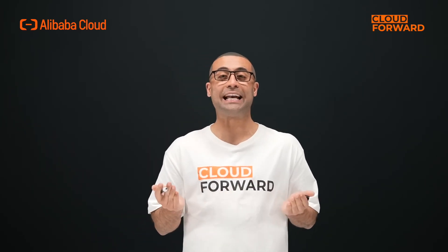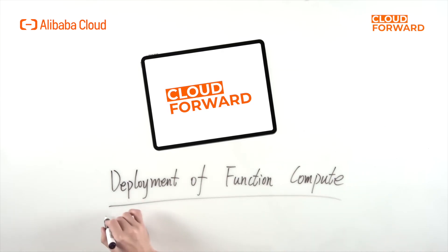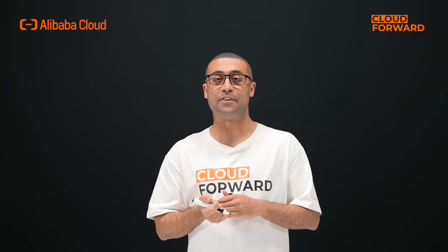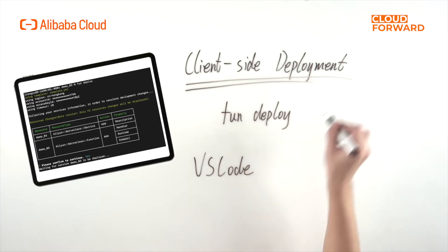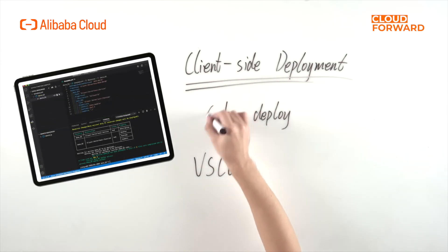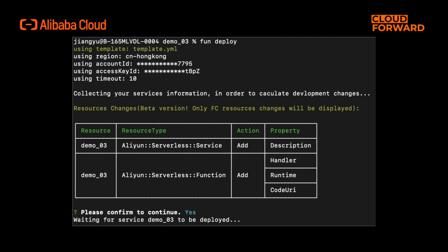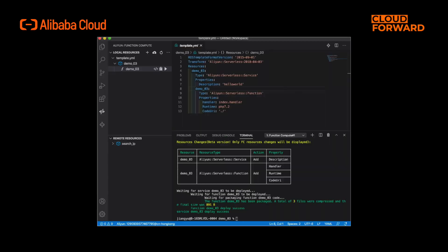Next, let's take a look at how to quickly deploy functions in Function Compute. The method of deploying functions is very simple and does not require special dependencies — even without Docker, it is possible. The first deployment method is to create a function online and upload the code package, or update the function by uploading the code package. The second deployment method is client-side deployment, which uses command line tools to execute Fun Deploy, or uses the VS Code plugin to click the upload and deploy button for automatic deployment.